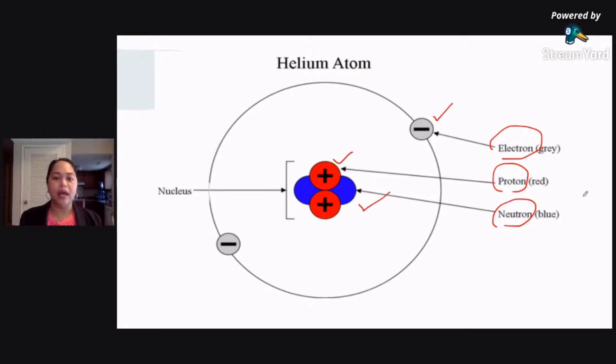Now, they are different in terms of unang-una, magkaiba po yung charge nila. Yung proton nyo po, yung charge na ay positive. So protons are positively charged, electrons are negatively charged, and neutrons, dahil nga sa pangalan niyang neutron, it is neutral. It has no charge.